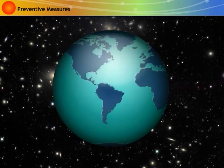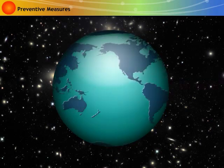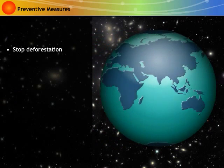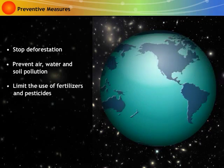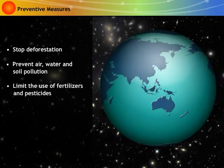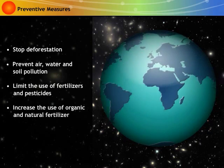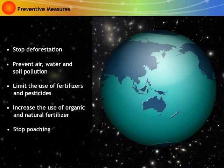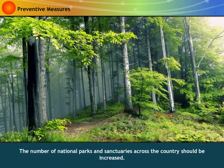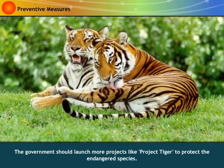To stop the ongoing challenge, the following steps should be followed: stop deforestation; prevent air, water and soil pollution; limit the use of fertilizers and pesticides; increase the use of organic and natural fertilizer; and stop poaching. The number of national parks and sanctuaries across the country should be increased, and the government should launch more projects like Project Tiger to protect the endangered species.